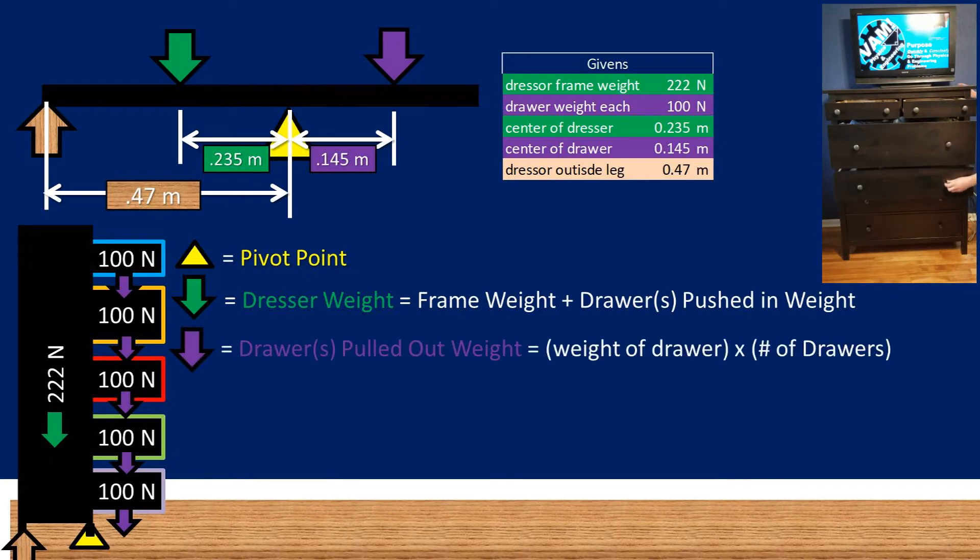Now the drawers pulled out weight is equal to the weight of each drawer times the number of drawers because all of the drawers' weights are 100 newtons each. If you wanted to complete this with variances in the drawer weight, you would simply add up the drawer's unique weights together.